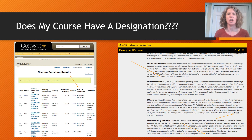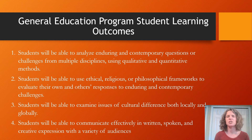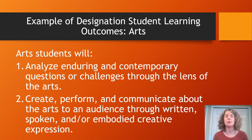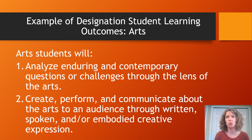Our general education program has four overarching student learning outcomes, and I'll come back to those. For now, I'll talk about the specific designations for particular courses. Here are the two student learning outcomes for the arts designation: students will analyze enduring and contemporary questions or challenges through the lens of the arts; and students will create, perform, and communicate about the arts to an audience through written, spoken, and/or embodied creative expression. If you're teaching an arts class, those are the two student learning outcomes your course should give students an opportunity to demonstrate. Most designations have between two and five outcomes.